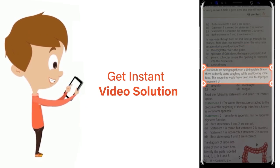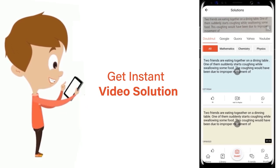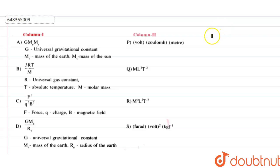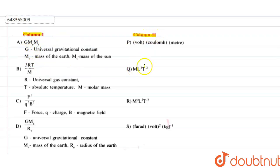Hello students. The question given here is that we have to match column one with column two. Column one contains physical quantities, and column two contains their dimensions and units.